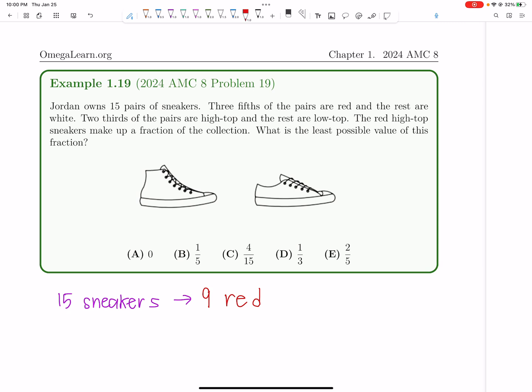Okay, so two-thirds are high-top. So two-thirds of 15 is 10. So 10, and I'm going to do this for high-top, so I'm going to make them really high. 10 high-top. So we've got nine red, and we've got 10 high-top.